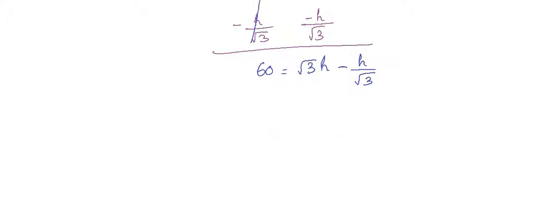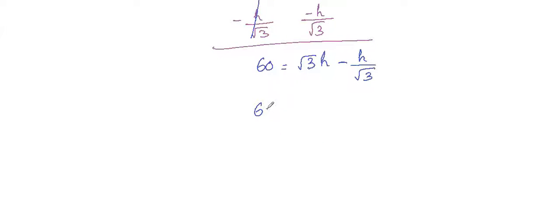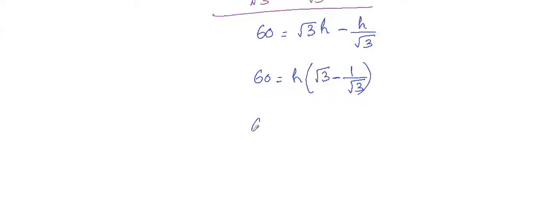So now take LCM and simplify. So we get 60 equals h into root 3 minus 1 by root 3. So if we take LCM, we'll get root 3 into root 3 minus 1, whole divided by root 3. Root 3 times root 3 becomes 3, so h into 3 minus 1 divided by root 3.